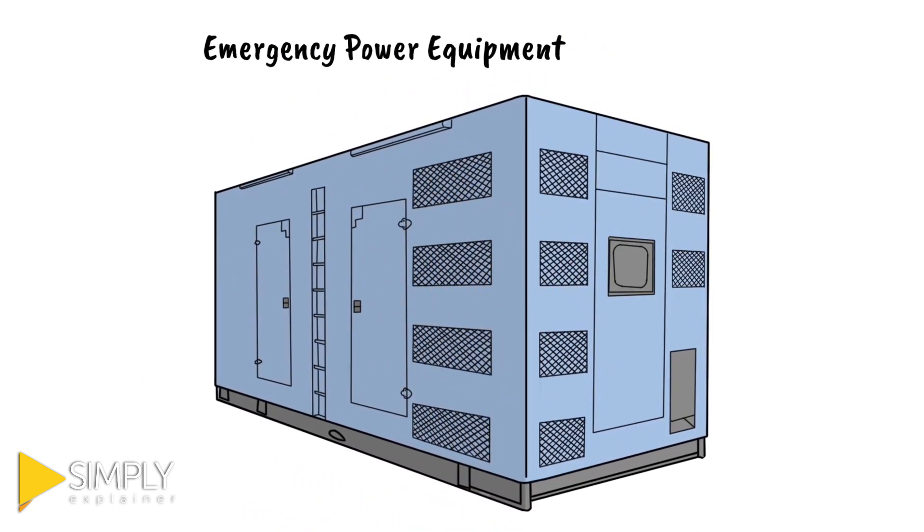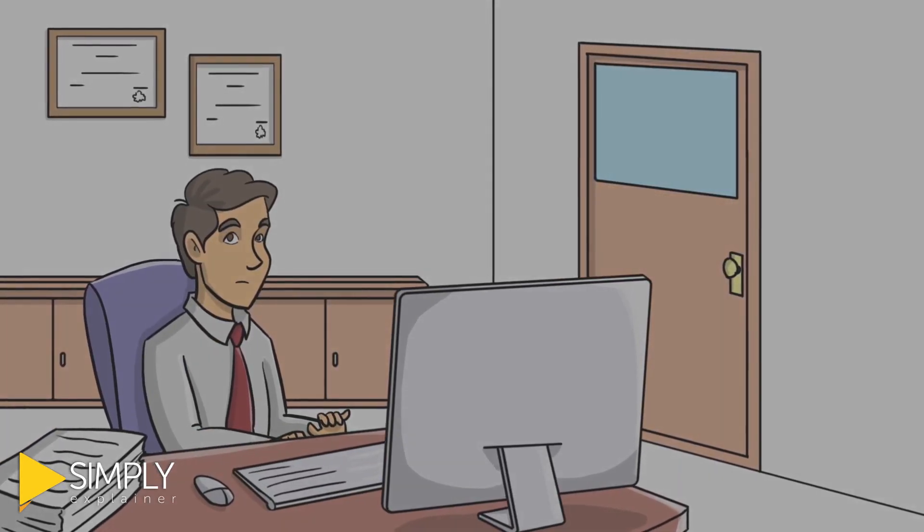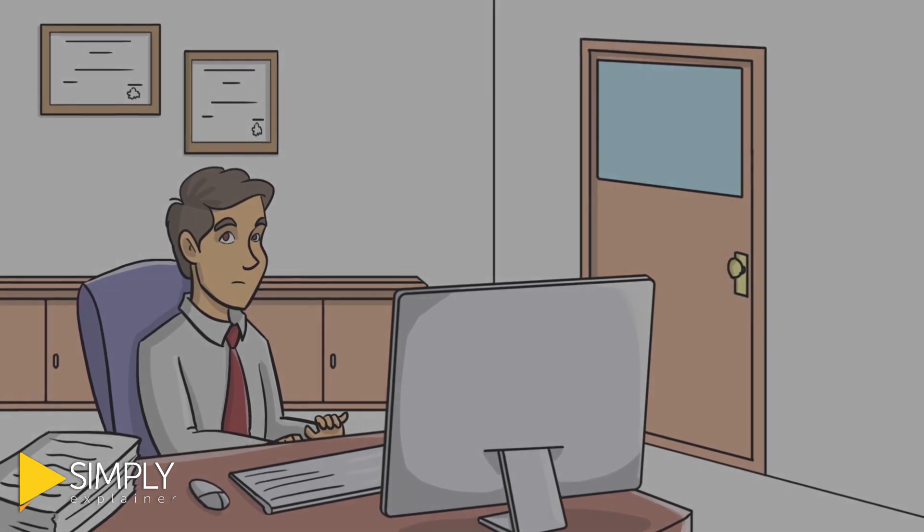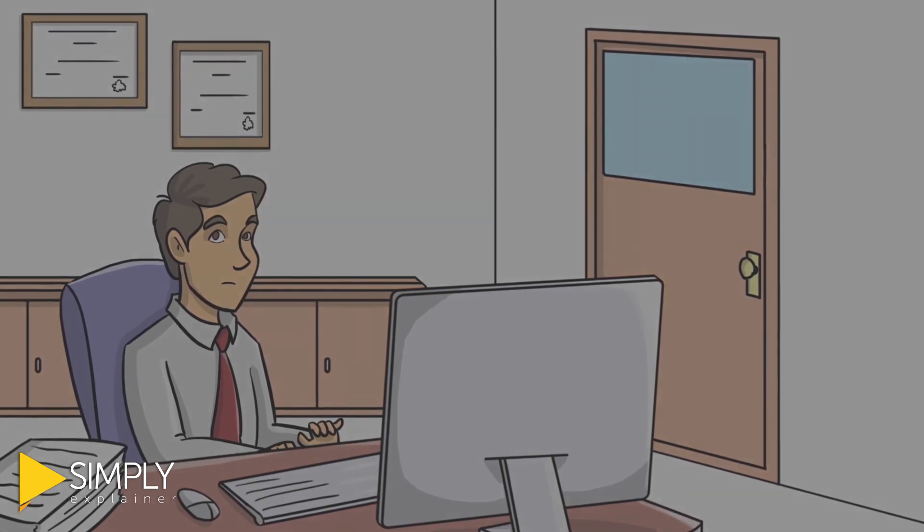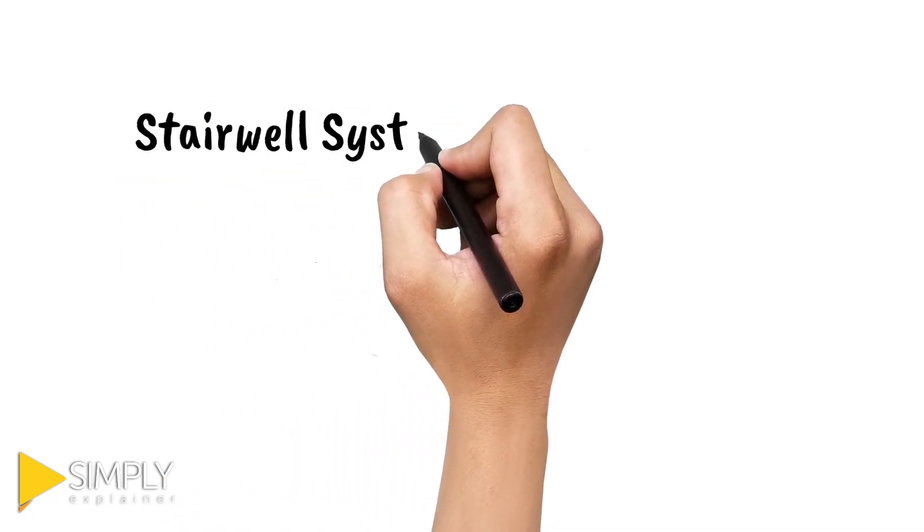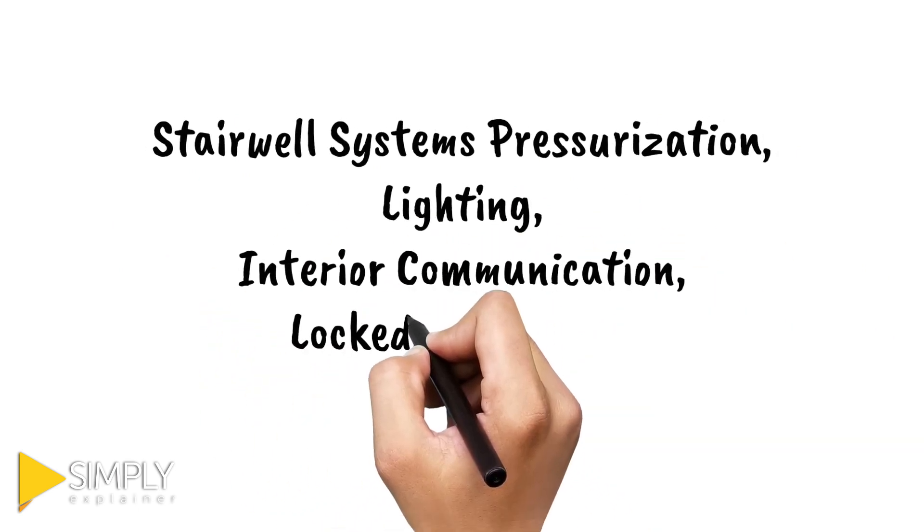Emergency power equipment, generator. In the event of failure of the normal source of electrical service, the standby power generation system shall provide an alternate source of electrical energy. Stairwell systems pressurization, lighting, interior communication, locked door areas.